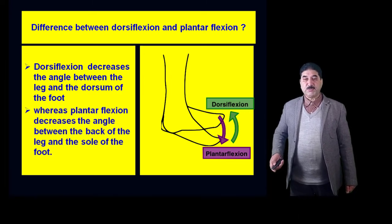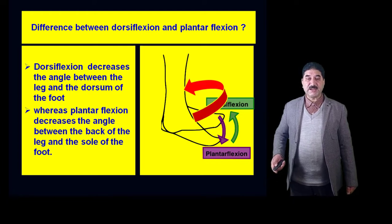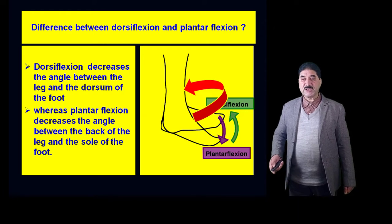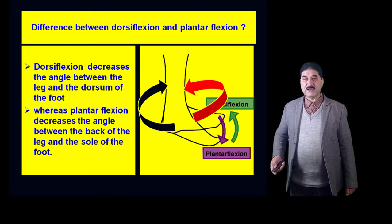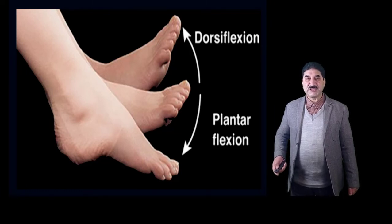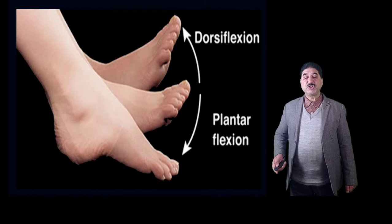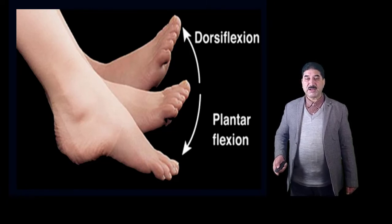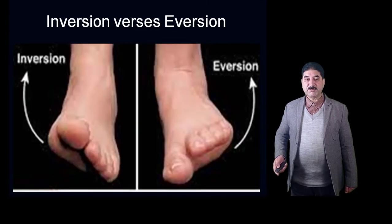Dorsiflexion decreases the angle between the leg and the dorsum of the foot, whereas plantar flexion decreases the angle between the back of the leg and the sole of the foot. During dorsiflexion, the dorsum of the foot and anterior aspect of the leg approach each other and the angle between them decreases. During plantar flexion, the sole of the foot and back of the leg approach each other and the angle of the joint decreases.